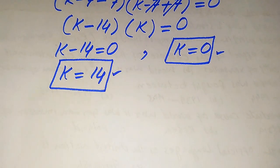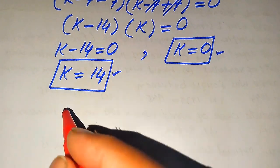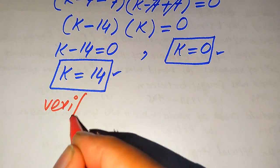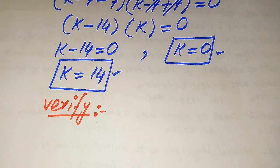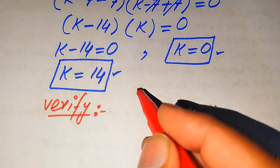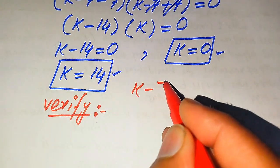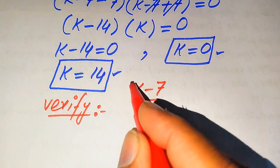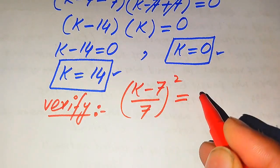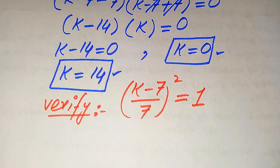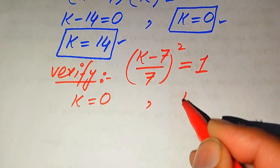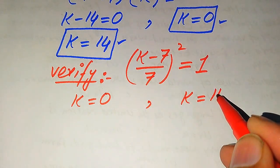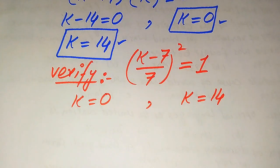We need to verify whether these two roots satisfy the given equation or whether they are extraneous roots. For verification, we copy down the given equation: (k minus 7) divided by 7, whole square, equals 1. On one side we verify k equals 0, and on the other side we verify k equals 14.